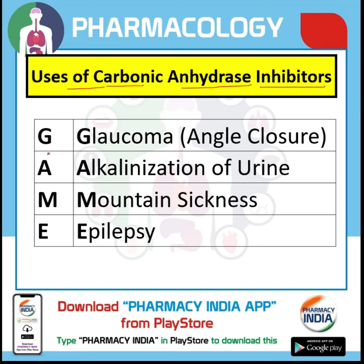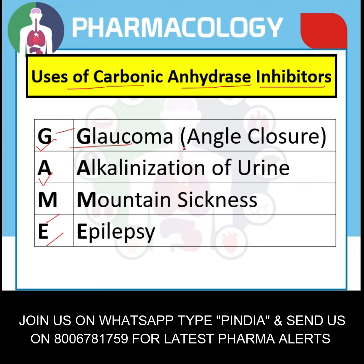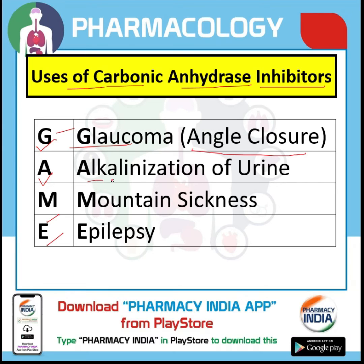The trick is the word GAME — G-A-M-E — where G denotes glaucoma (angle closure), A denotes alkalization of urine, M denotes mountain sickness, and E denotes epilepsy. These are the uses of carbonic anhydrase inhibitors.